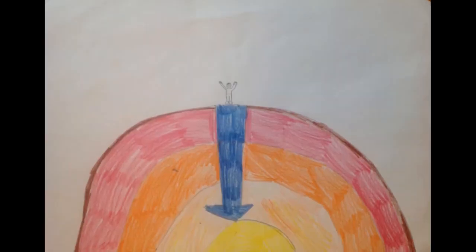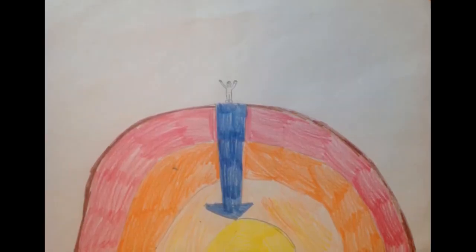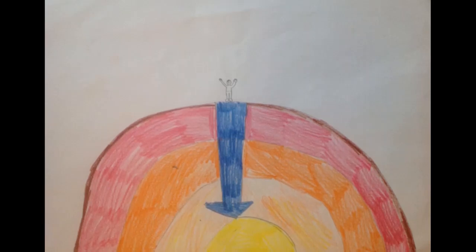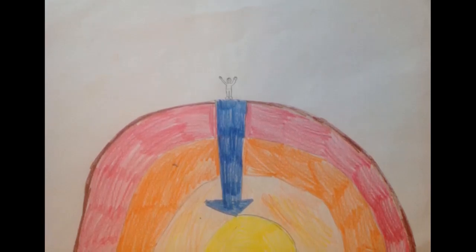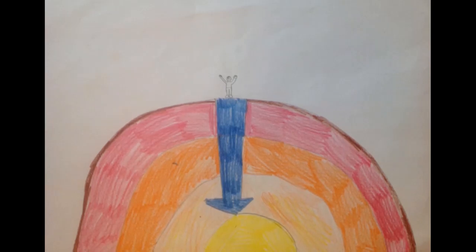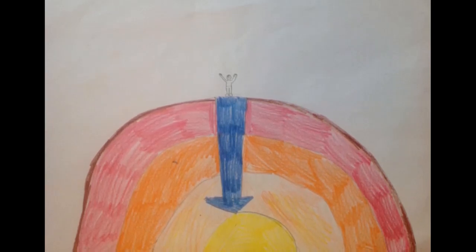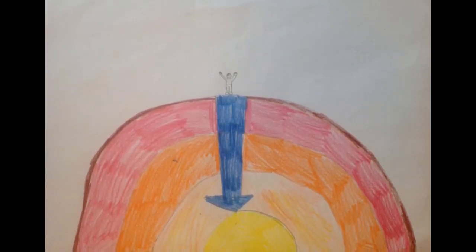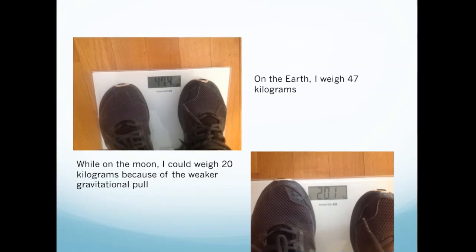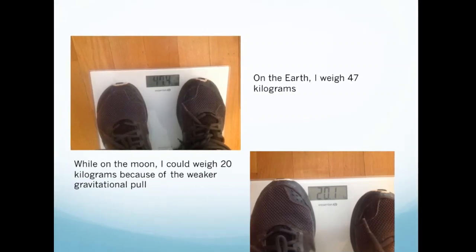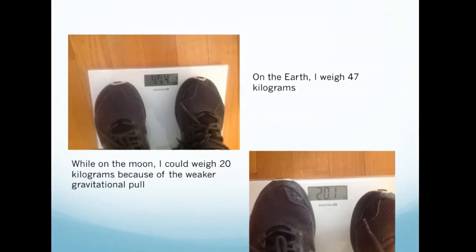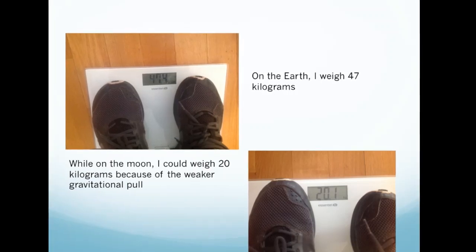One thing to note from this formula is that distances are based on the center of mass, the center of gravity, so that even though I may be standing on the surface of the Earth, I am still at quite a distance from the center of the Earth — around 6,400 kilometers or 3,980 miles. An object like an apple being pulled towards the Earth has a force called its weight. I weigh 49 kilograms on Earth, but since the gravitational pull on the Moon is different, I could actually weigh only 20 kilograms on the Moon.